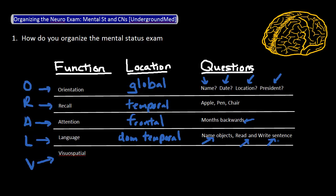Finally, you should test visual spatial function, which assesses the non-dominant temporal lobe. I like to ask the patient to draw a clock face with all the numbers and to put the hands of the clock at 1:20. With that, you've tested five important functions of the brain and already have an idea about how well specific areas of the brain are functioning. There are many other questions you can ask, but most of them will fall into one of the major categories we have just gone over with our mnemonic ORAL V.